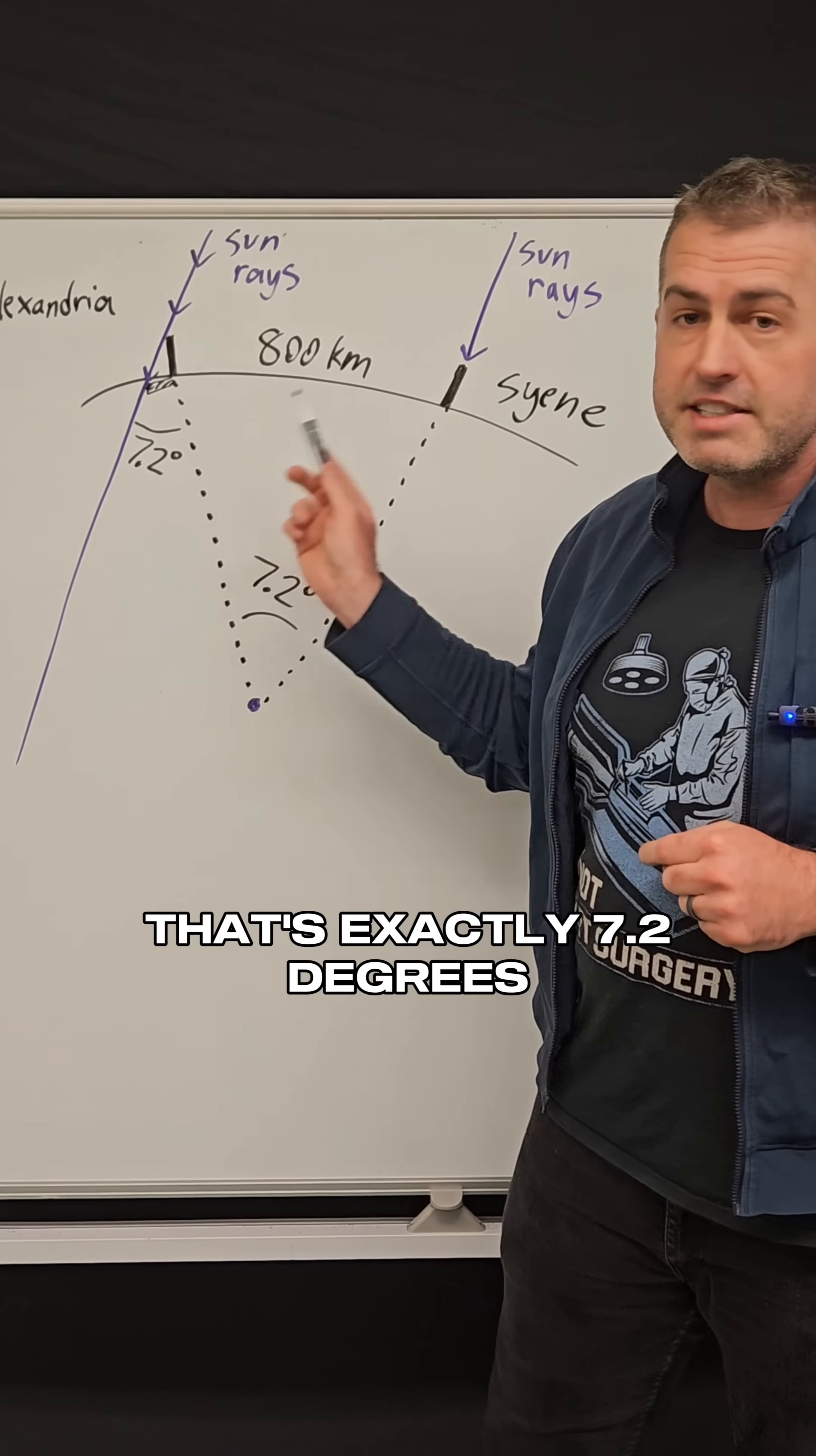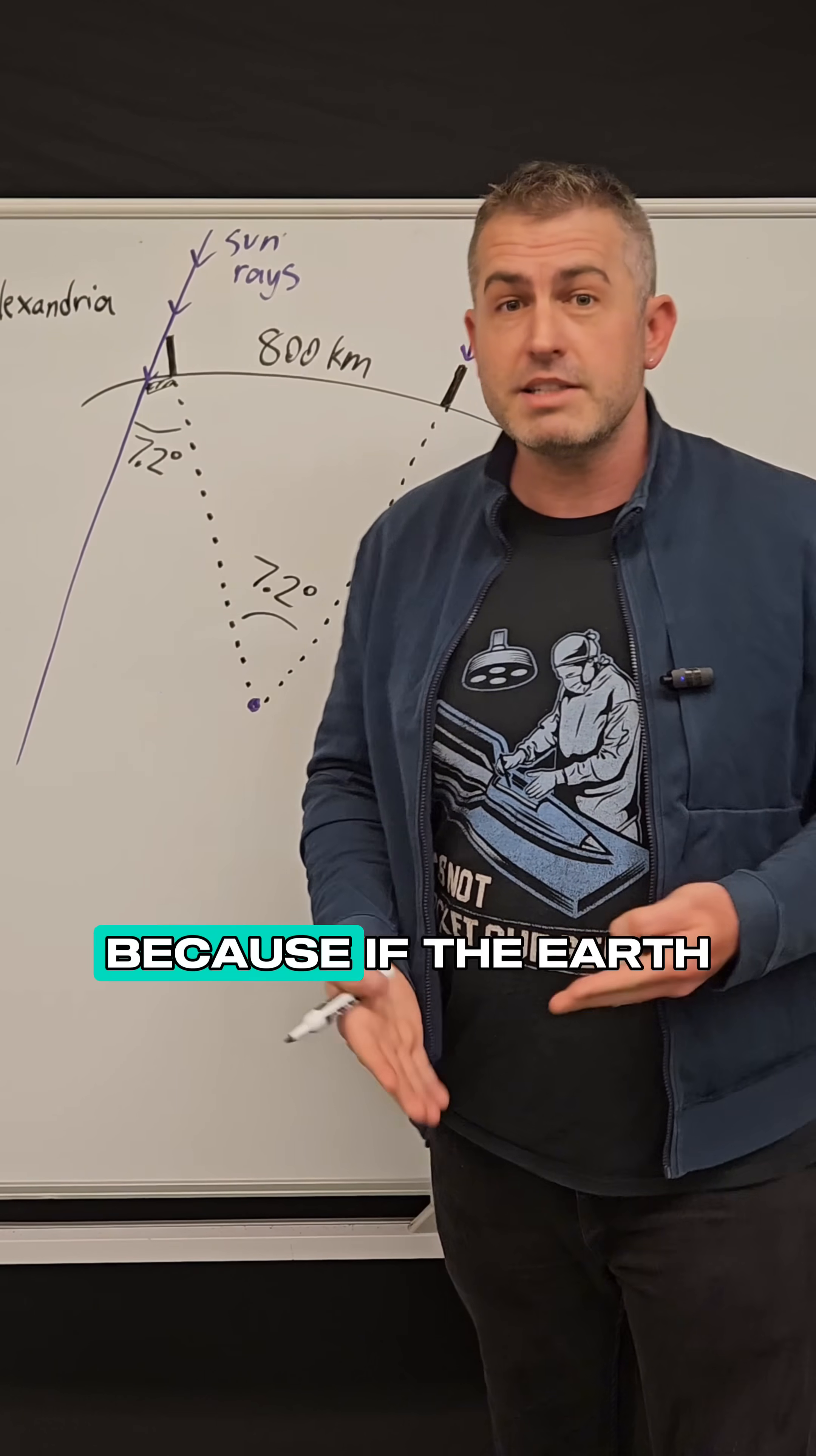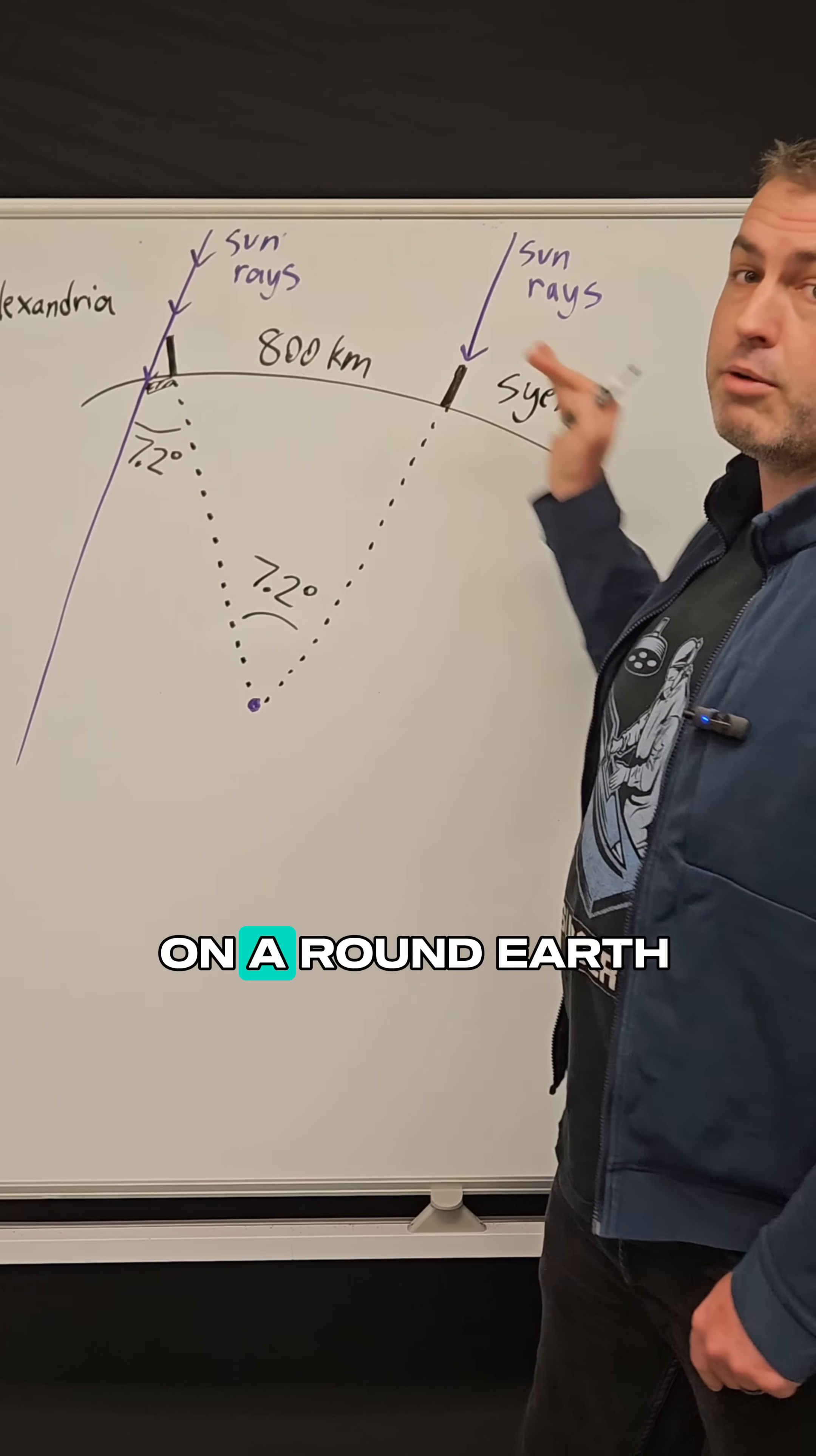And so actually before even figuring out how big the earth is, just by doing this he was able to prove that we live on a round earth. Because if the earth was flat and no shadow was created by this stick there would also be no shadow over there. So the fact that there was a shadow in this city proved that we were on a round earth.